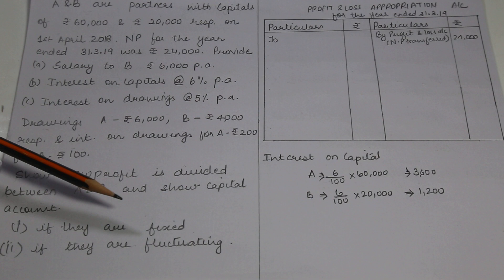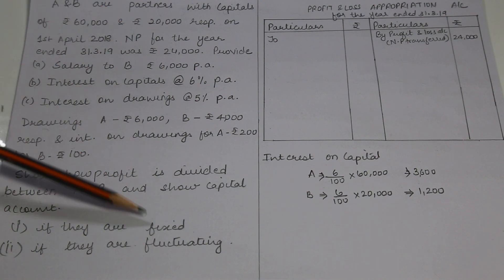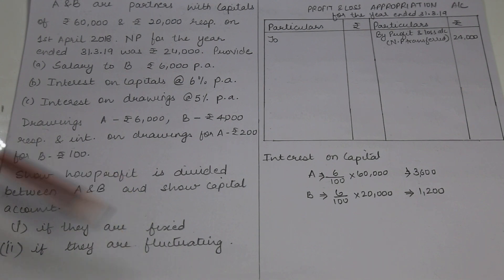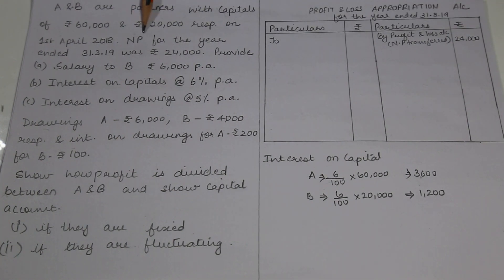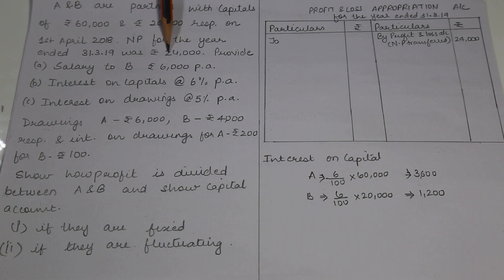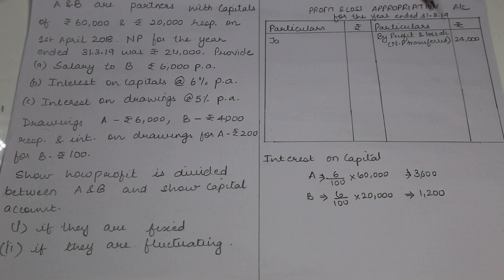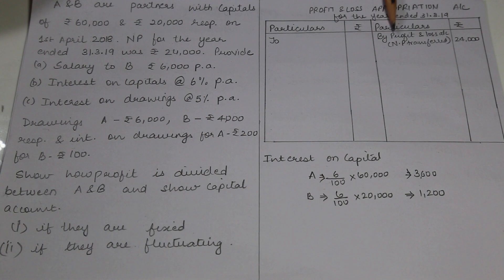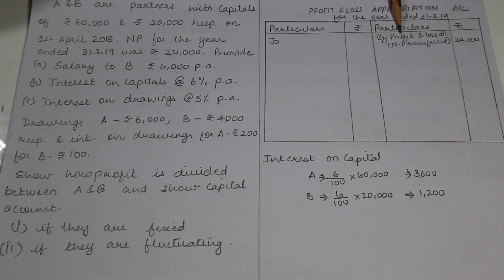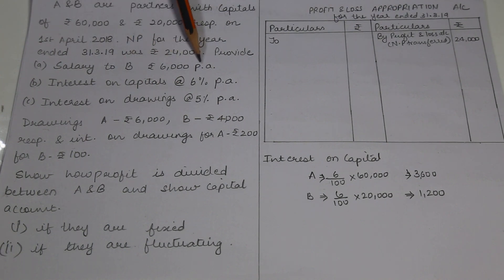In this sum, the Profit and Loss Appropriation Account will be the same for both methods. First, we are going to prepare the Profit and Loss Appropriation Account. Do not forget to write the name of the account — Profit and Loss Appropriation Account for the year ended 31st March 2019 — and the column heads. We start with net profit of Rs. 24,000 transferred from the Profit and Loss Account. Now let's look at adjustments. Salary is Rs. 6,000 per annum.